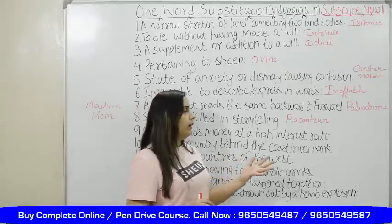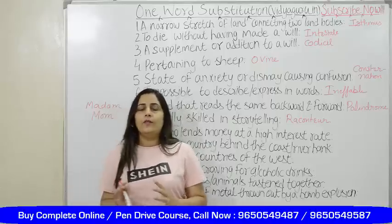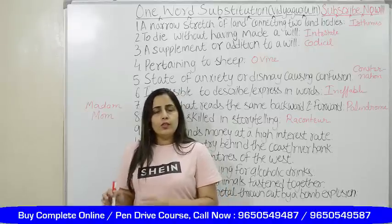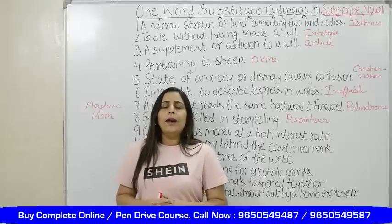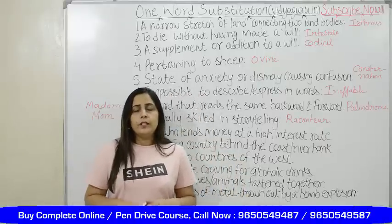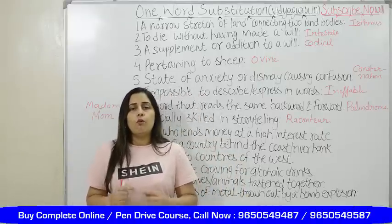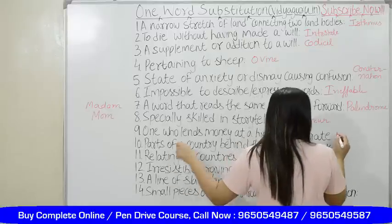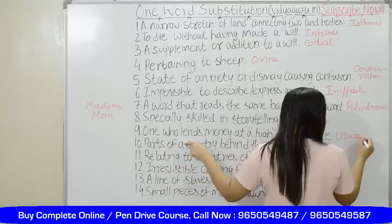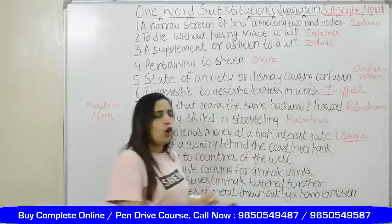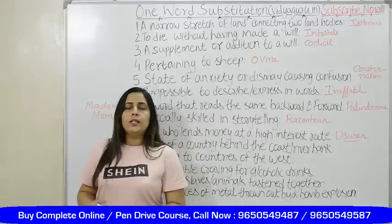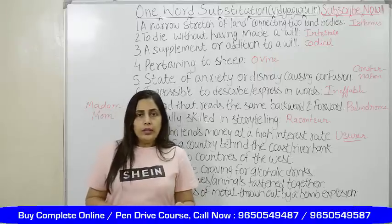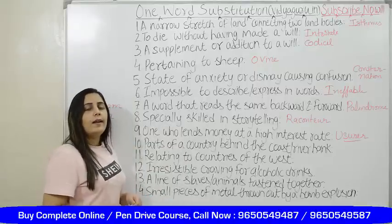One who lends money at a high interest rate. This happens when you are in need and not getting loans from reliable resources, so you move to such persons who are actually charging high to give you loans. This person is basically a lender but charging you more interest. That person is known as a usurer. Usurer is the word which means a lender who is charging more for lending money.